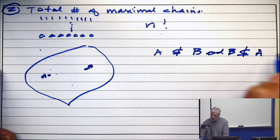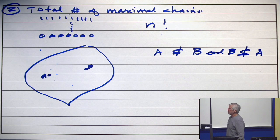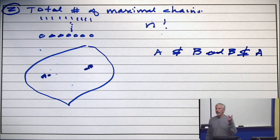A is not a subset of B, and B is not a subset of A. In other words, in the poset, they form a two-element anti-chain.